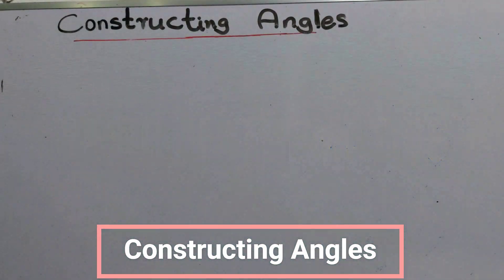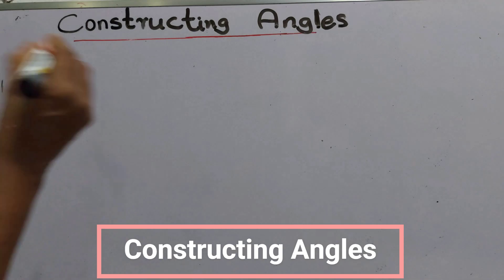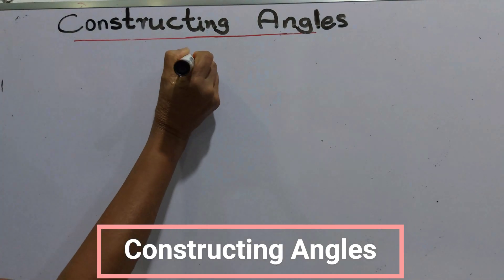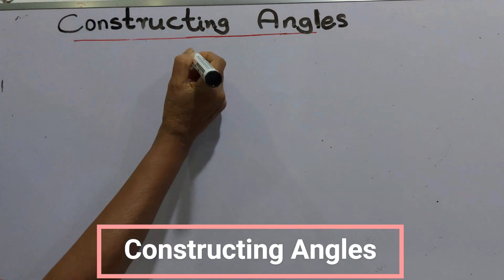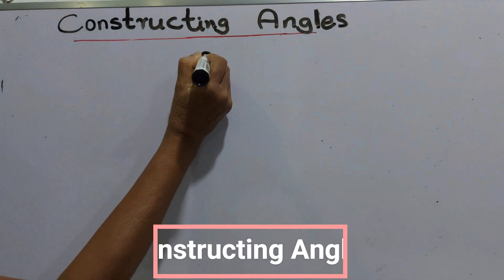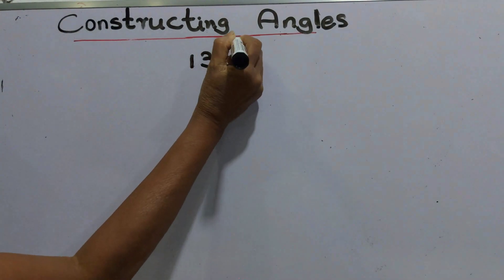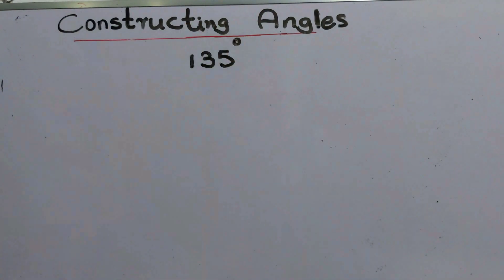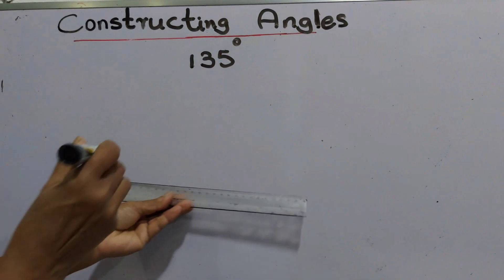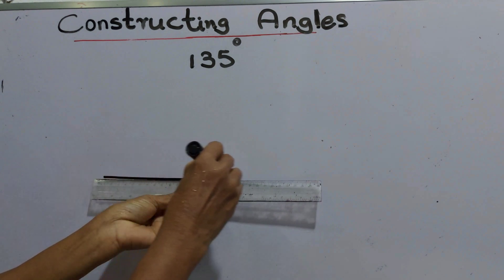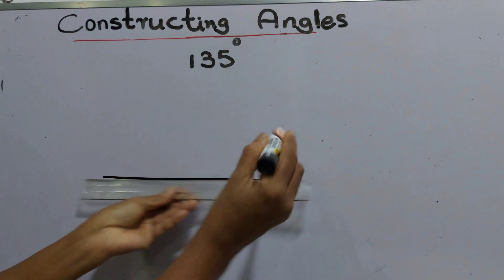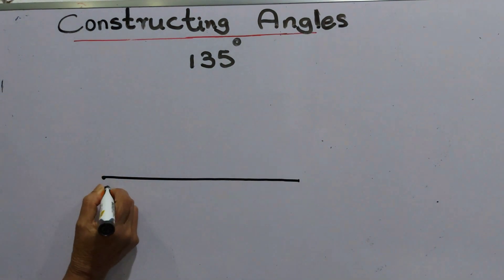Today, under constructing angles, we are going to draw an angle of 135 degrees. The first step is to draw a line segment. We'll name it as A.